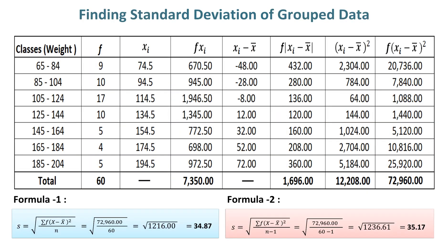Finding standard deviation of grouped data. The numerator value for finding standard deviation is 72,960 and denominator value is 60. Thus, the standard deviation in this example using Formula 1 is 34.87.